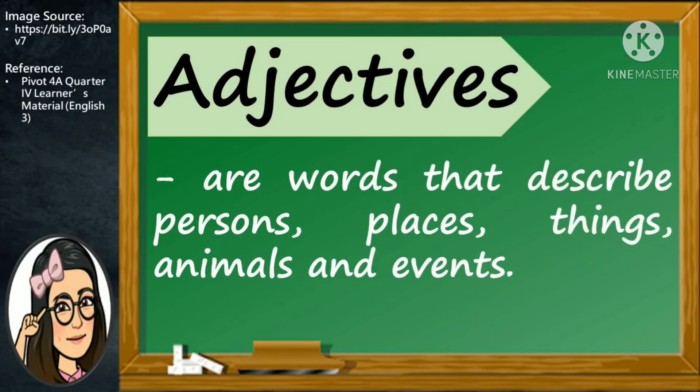Adjectives are words that describe persons, places, things, animals, and events. They tell something about a noun.